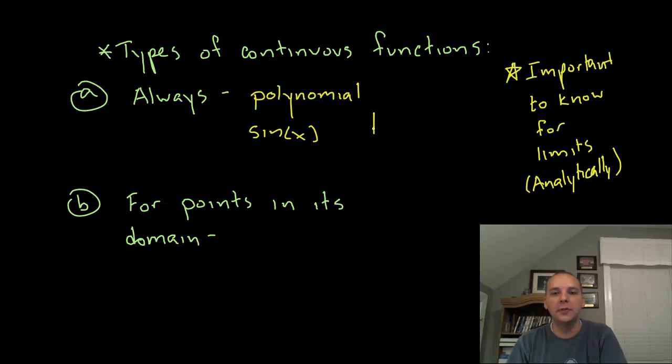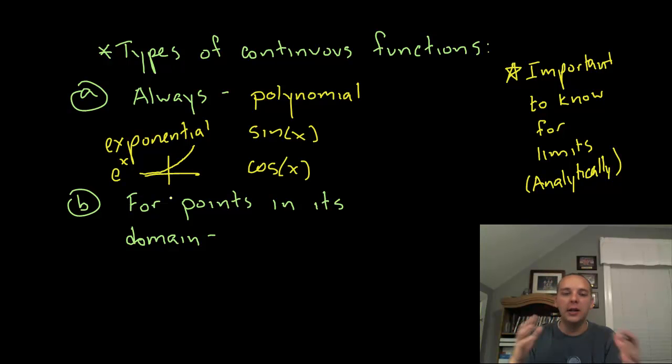Same thing for like sine x. If you're familiar with that trig function, it just goes up, down, up, down, up, down forever in both directions. It's obviously continuous. Same thing for cosine x. The cosine graph, that's continuous. So these two are trig functions. Functions like exponential functions are always great, like e to the x. If you're familiar with the graph of e to the x, where it's exponential growth, there's no breaks or jumps or holes or asymptotes in that graph either. So these four are continuous always and forever on the whole real number line.